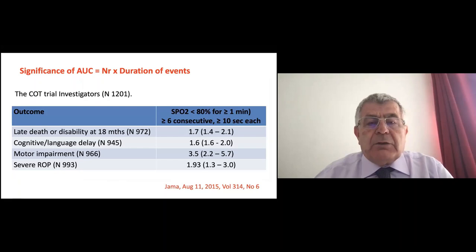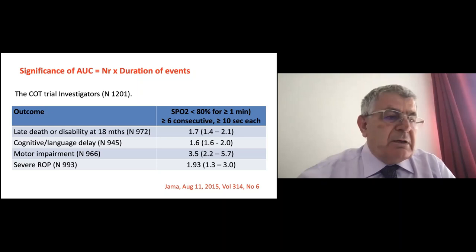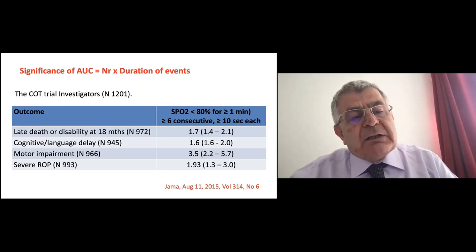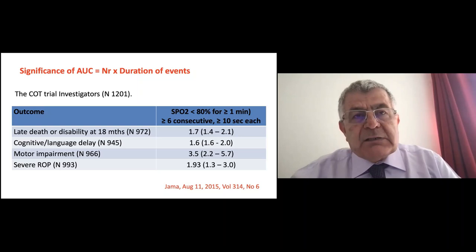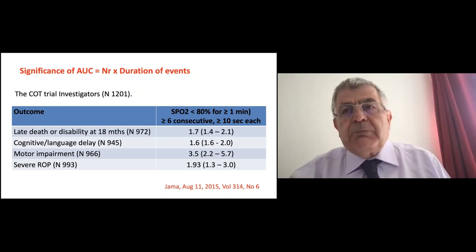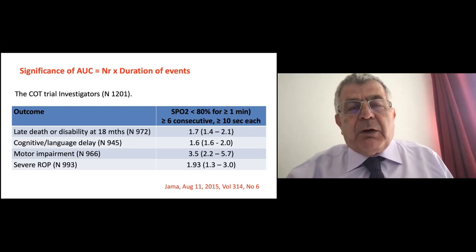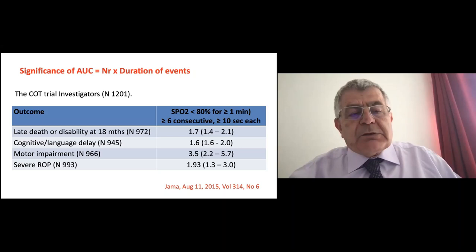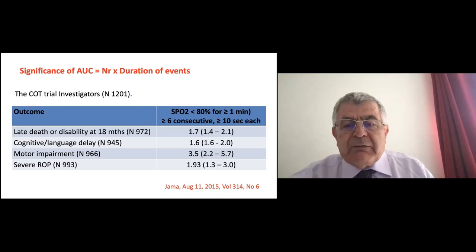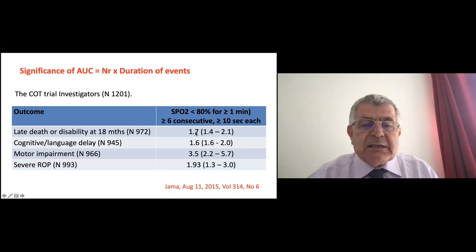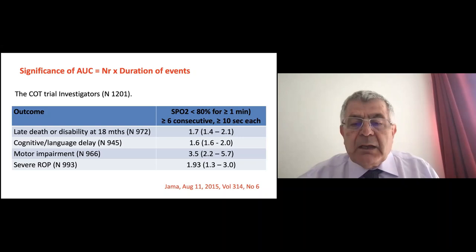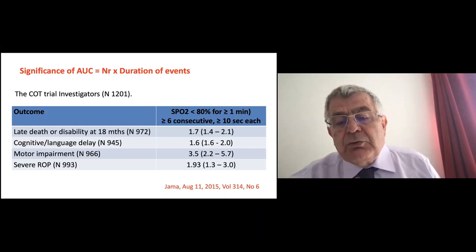Duration and depth of hypoxia are also relevant. This is a large post-hoc analysis from the COT — Canadian Oxygen Trial — which compared 85–90% versus 90–95% saturation targets to determine whether we could reduce ROP by selecting a lower target. The COT trial demonstrated that targeting 85–90% reduced ROP but increased mortality and cognitive problems. The recommendation remains 90–95% for most units. The post-hoc analysis recounted hypoxic events and found an association — a relative risk of 3.5 — between hypoxic events and death or disability, cognitive delay, and motor impairment, and a relative risk of nearly 2.0 for severe ROP requiring laser. This confirms that hypoxic events are relevant. We cannot simply say 'the baby isn't having apnea, let's continue.'